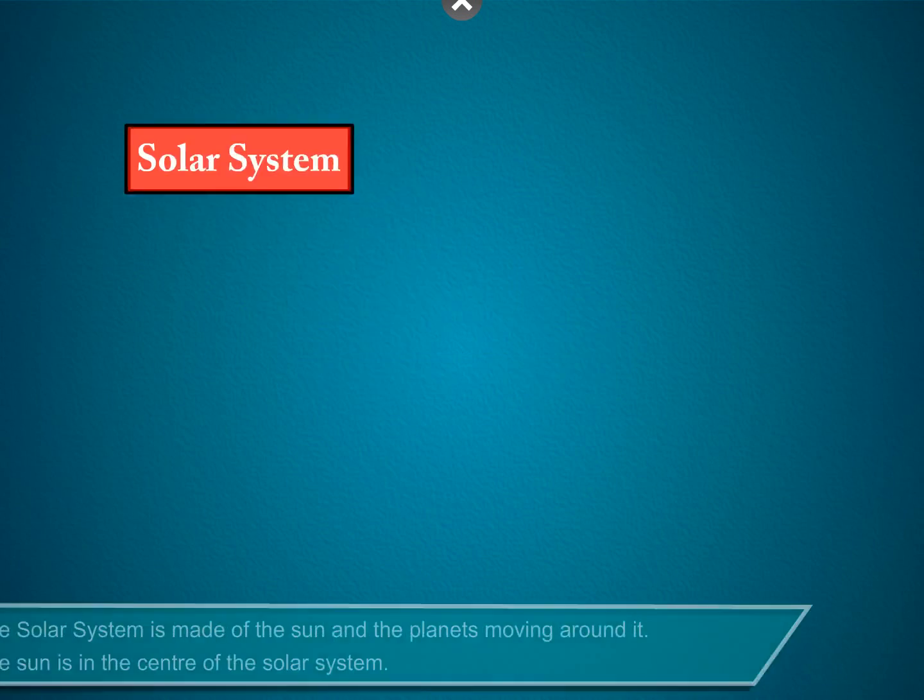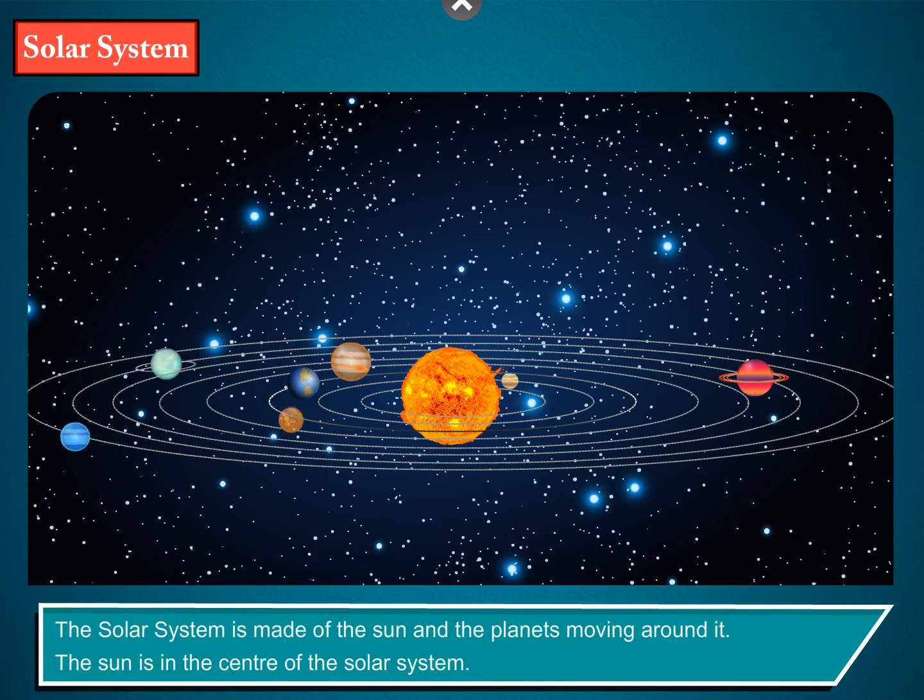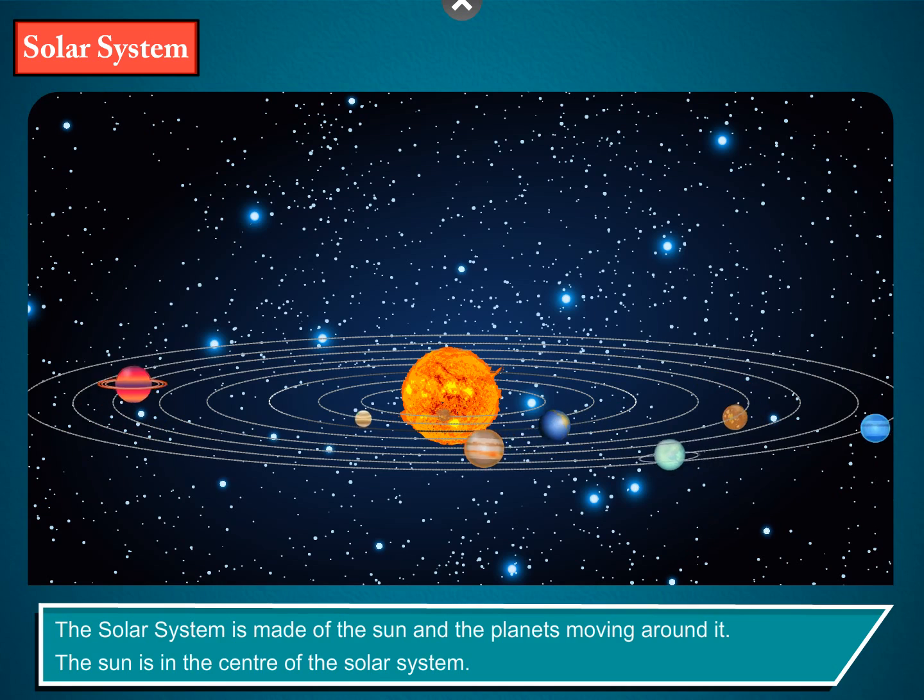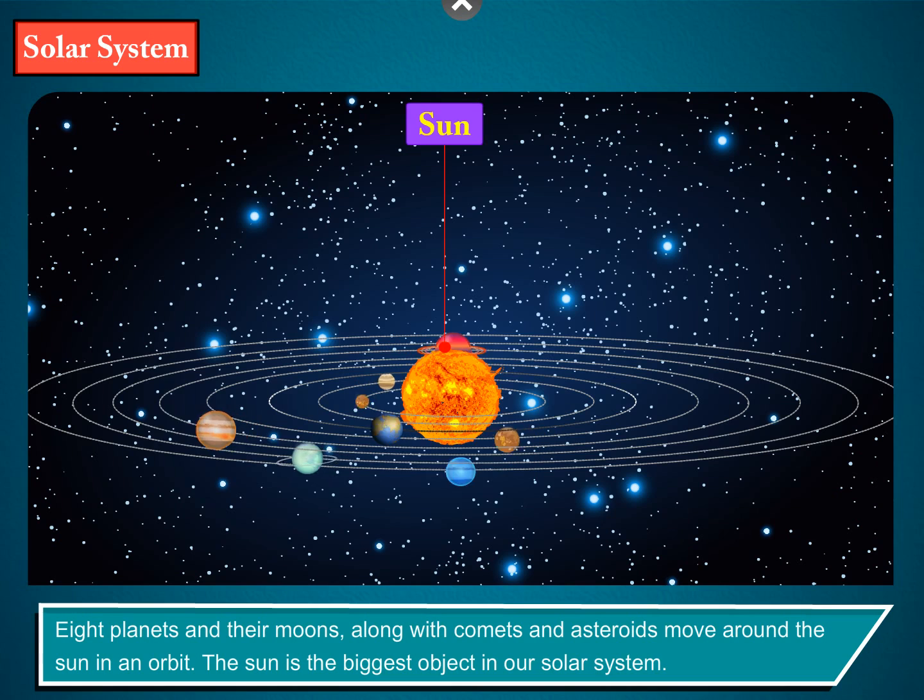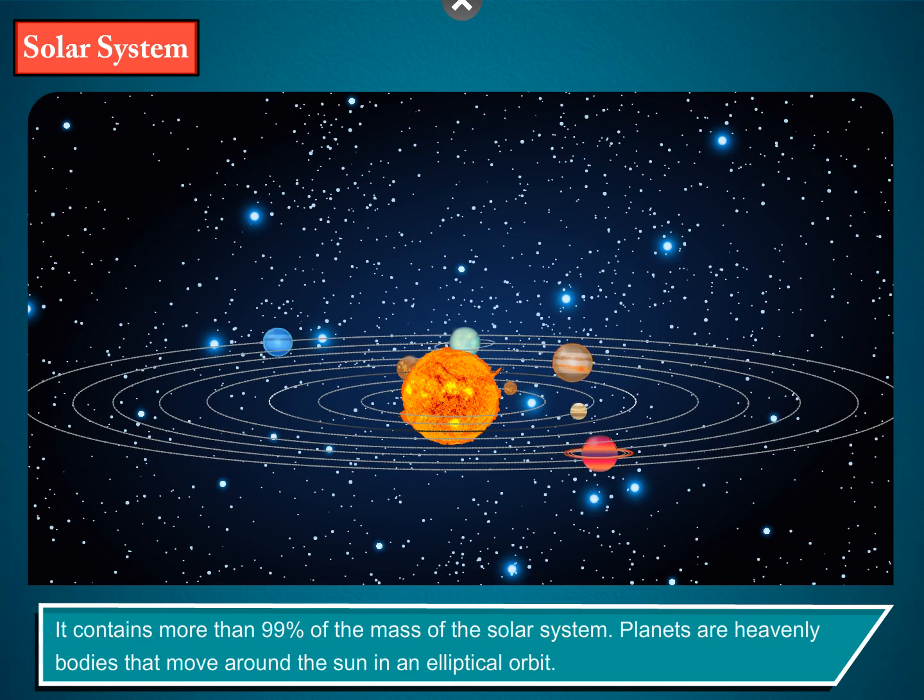Solar System: The solar system is made of the sun and the planets moving around it. The sun is in the center of the solar system. The sun, eight planets and their moons, along with comets and asteroids, move around the sun in an orbit. The sun is the biggest object in our solar system, containing more than 99% of the mass of the solar system.